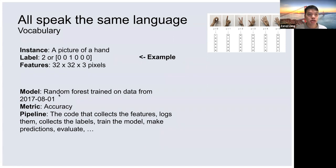Some model examples could be random forest trained on data. Metric could be accuracy — of course we want to predict correctly as many examples as possible. Pipeline I'll explain later.